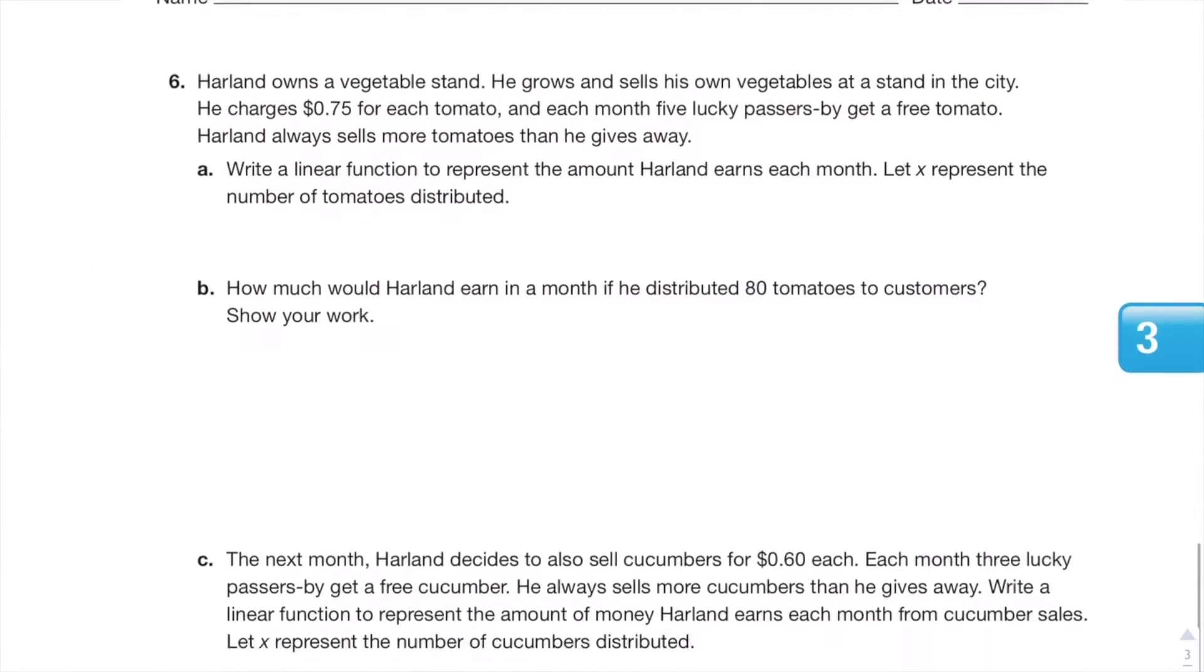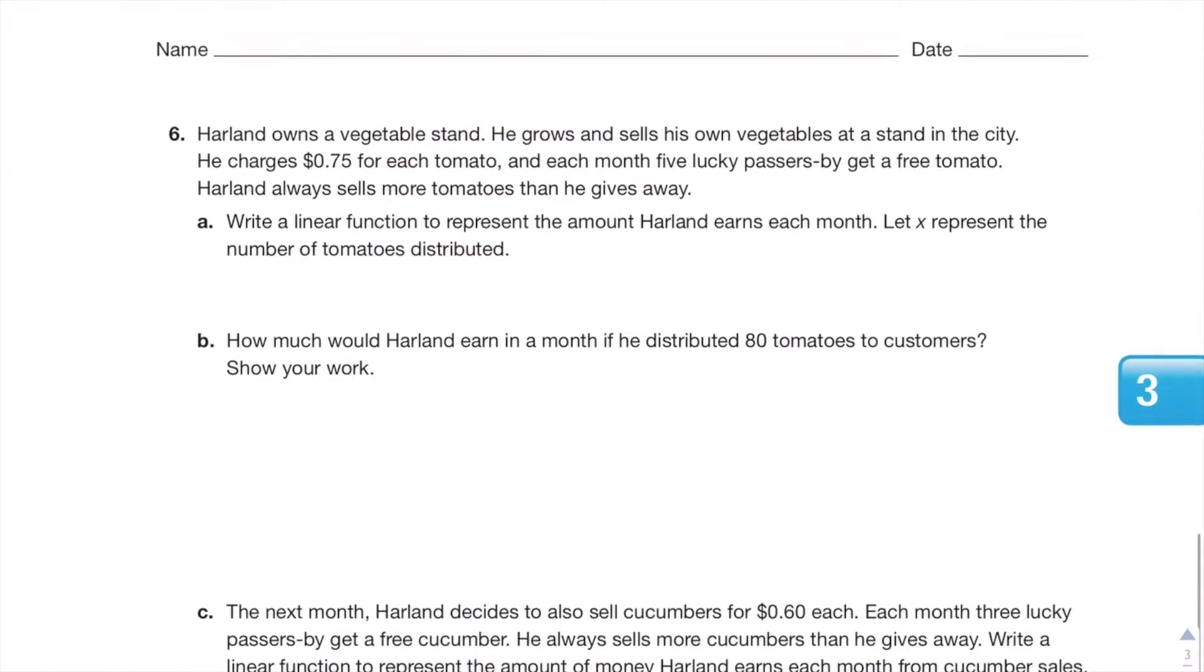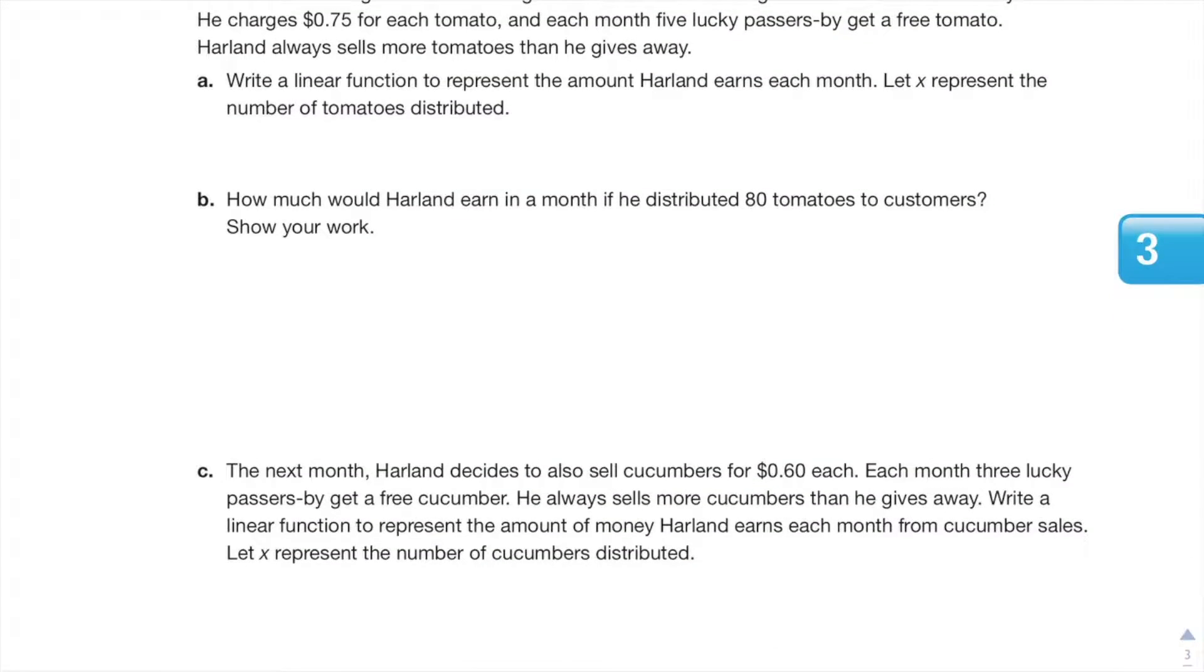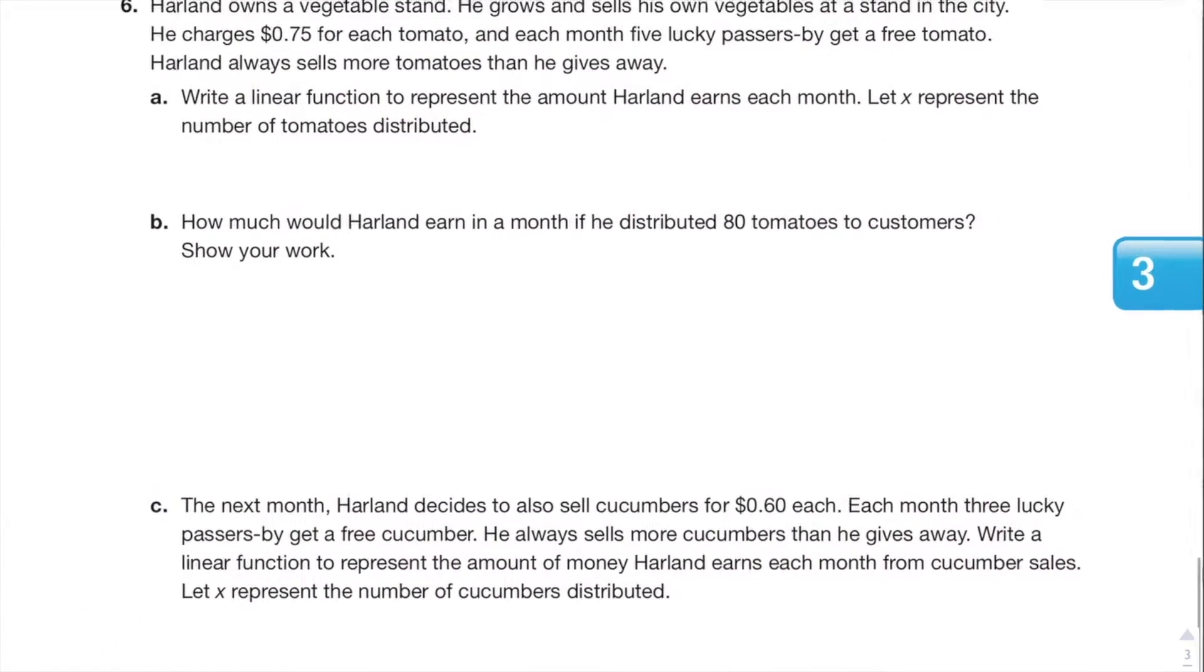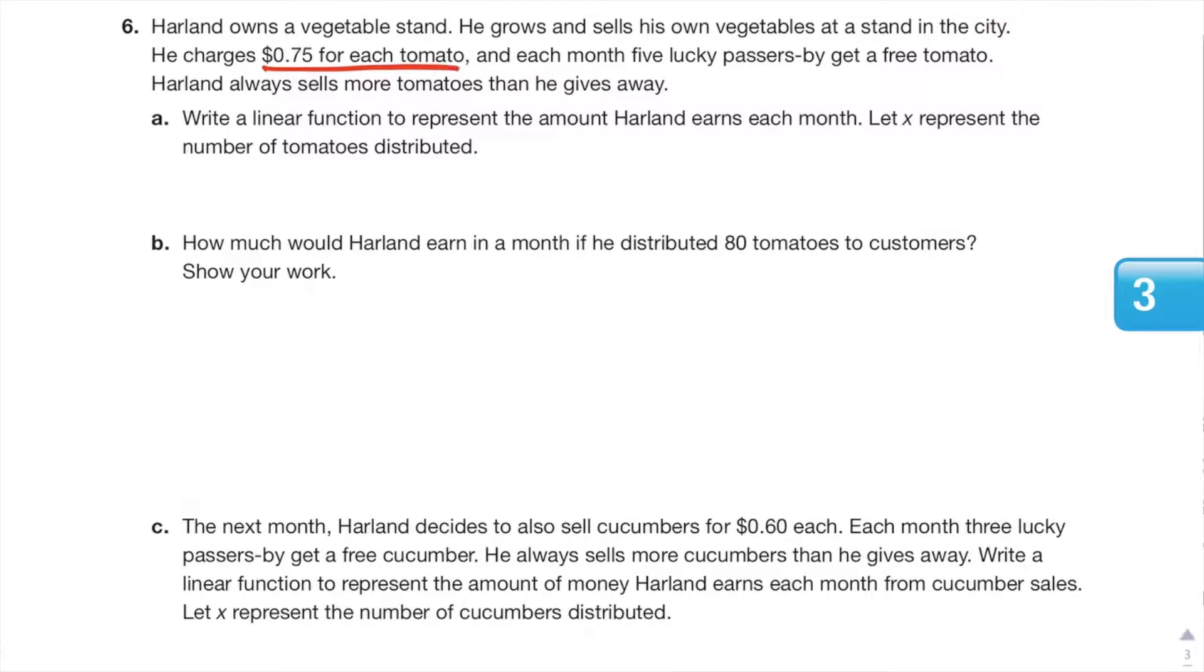Let's move on. Last question, ooh this one looks tricky and of course there's a lot of problems. Harland owns a vegetable stand. He grows and sells his own vegetables at his stand in the city. He charges 75 cents for each tomato, and each month five lucky passersby get a free tomato. Harland always sells more tomatoes than he gives away.